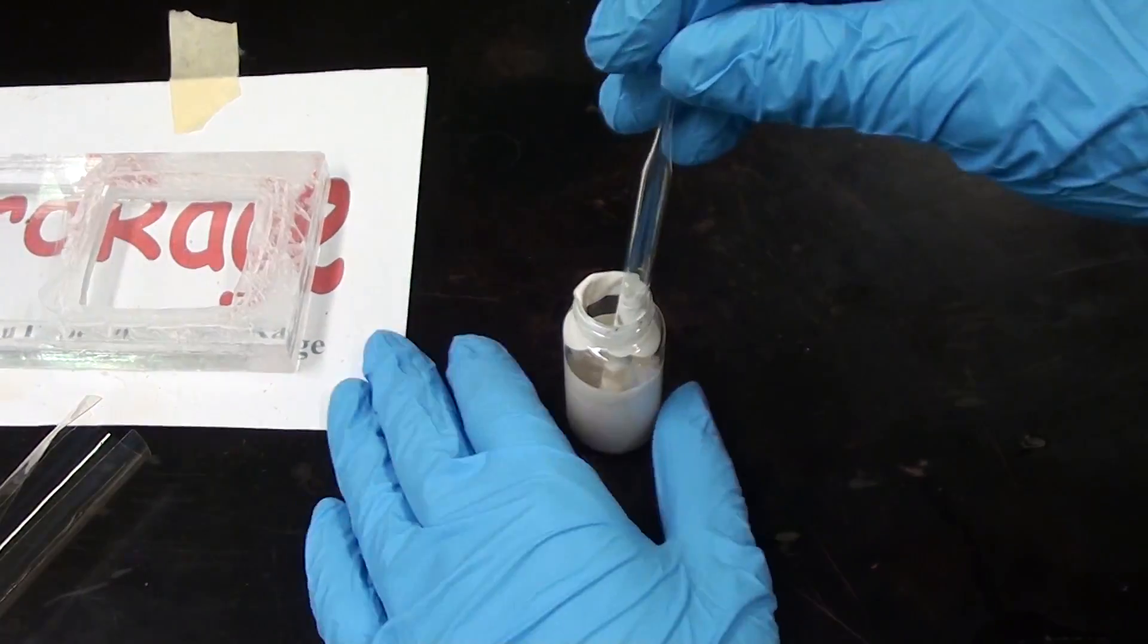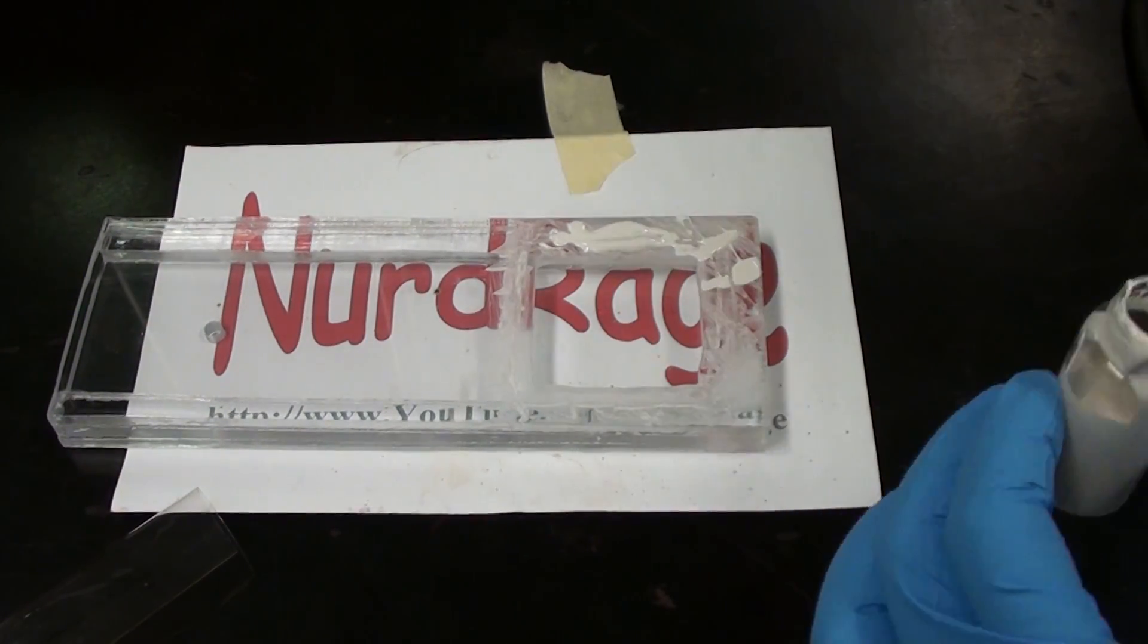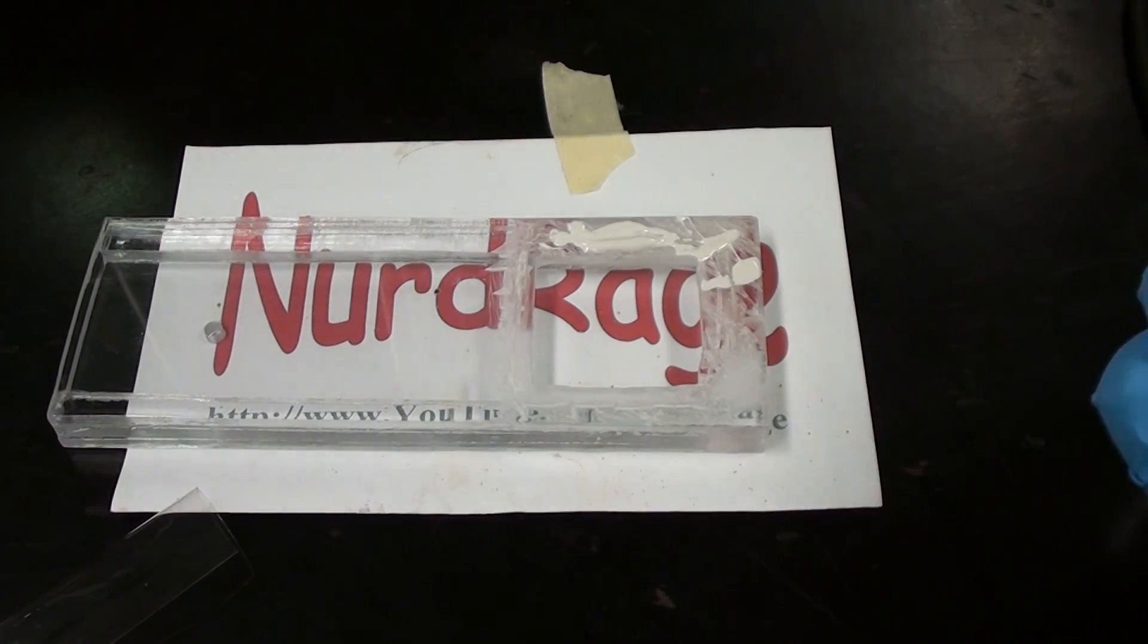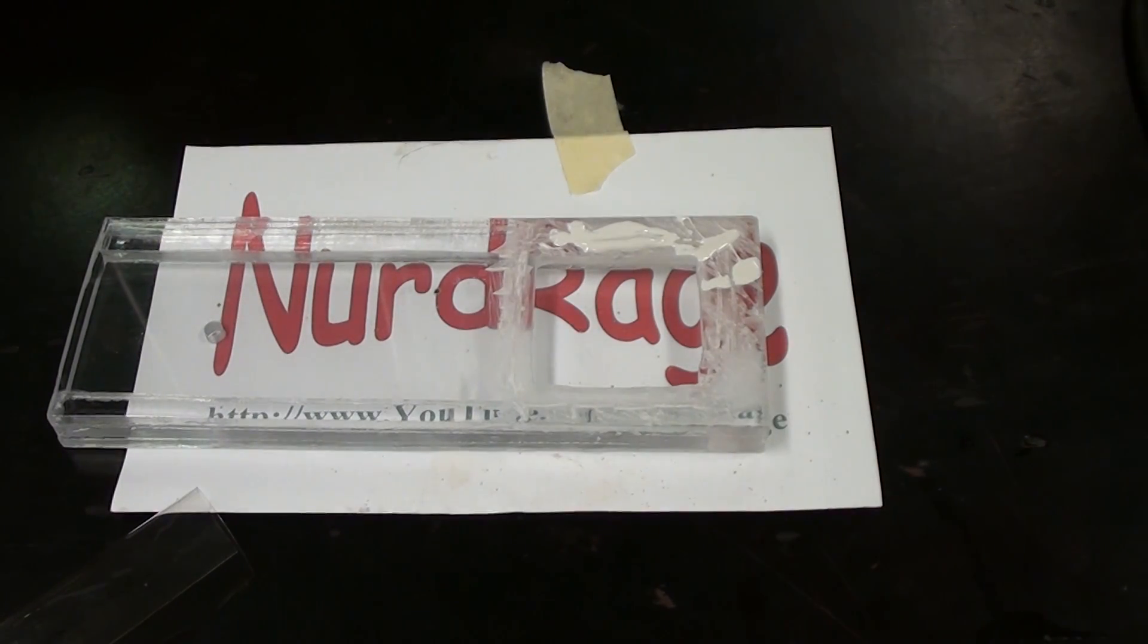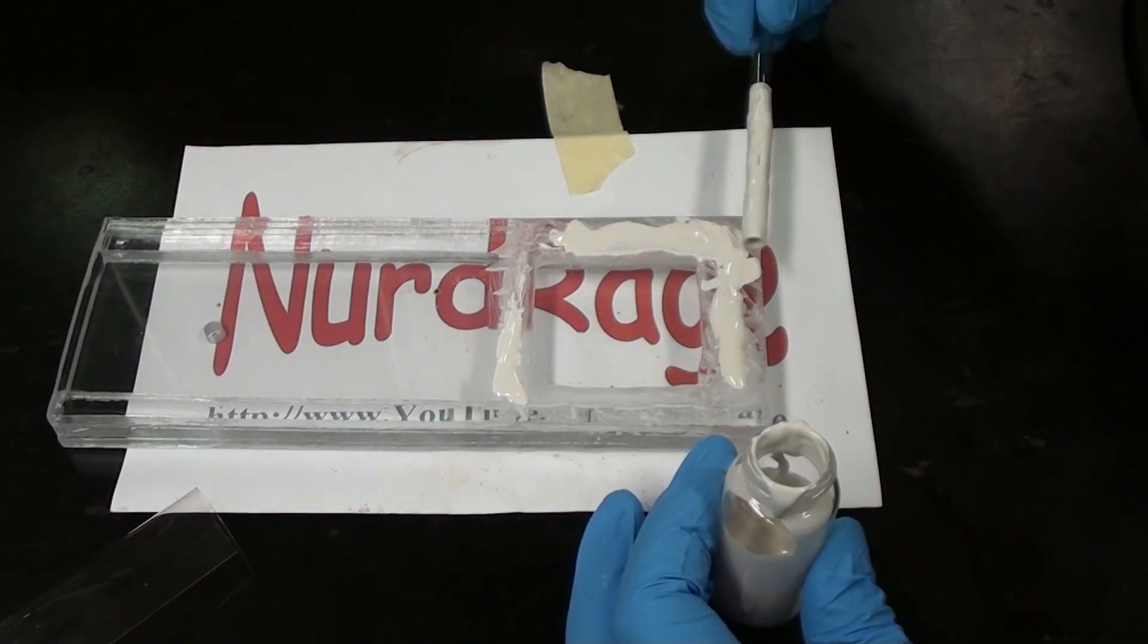I've roughened the surface with a file so the epoxy can form a stronger mechanical bond. Perfectly smooth acrylic is very hard to glue anything to. You might be wondering why I'm not using acrylic bonding solvent. Nafion doesn't bond with acrylic at all, but it does bond somewhat with epoxy. And that's why I'm using it to bridge the two.